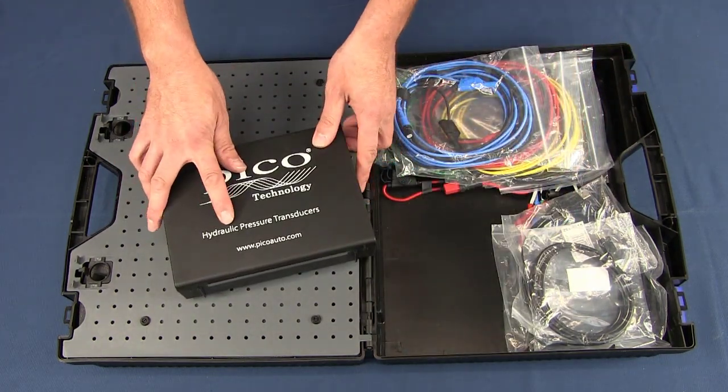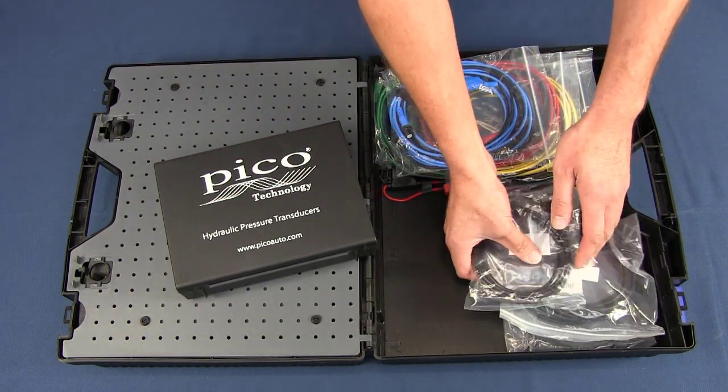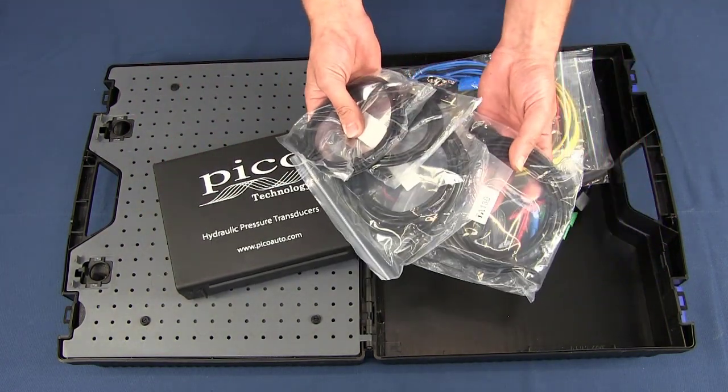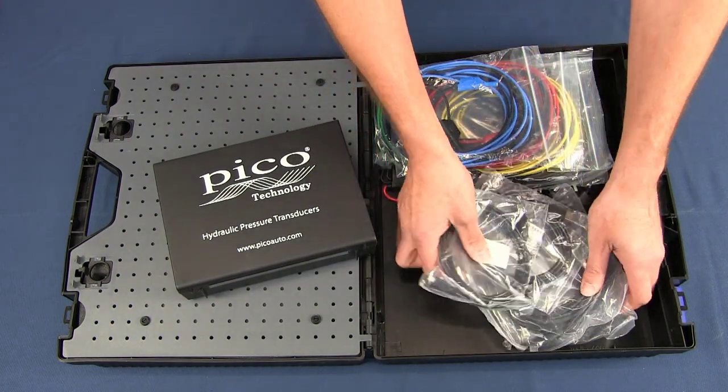The hydraulic pressure transducers - we get two in this kit. And to go with those transducers you get two BNC to BNC leads and two charging cables as well.